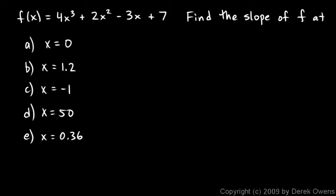And here's another example. f is 4x cubed plus 2x squared minus 3x plus 7, and we want to find the slope of f at these points.